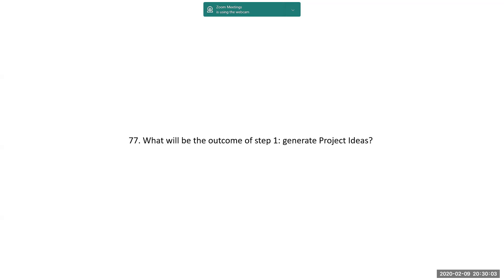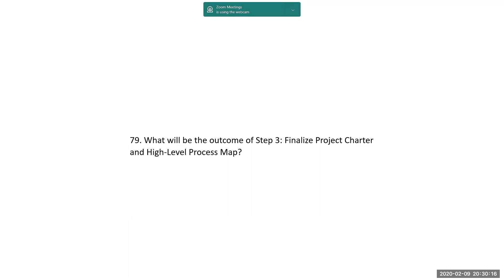What will be the outcome of Step 1? Generate project ideas — different projects. What will be the outcome of Step 2? Select projects — compare projects and select the best one. What will be the outcome of Step 3? Finalized project charter and high-level process map — a clear-cut definition of what the project is, the scope, the problem statement, and the ultimate objective.